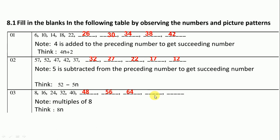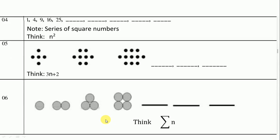8×9 the 72, and last one is 8×10 the 80. Let's move to next one. Question number four, series of square numbers.